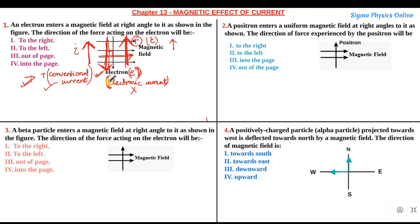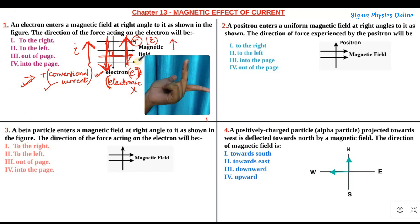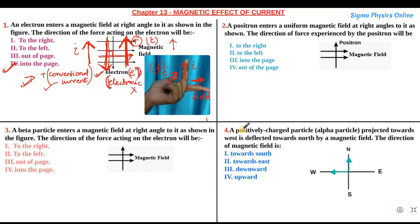Now let us realign our fingers in accordance with this question. The magnetic field direction is from left to right, so we point our forefinger to the right. The current is in the upward direction, so the middle finger points upward representing the direction of current. As you can see in this image, the thumb is pointing inwards — away from the body — so the force acting on the electron will be into the page.